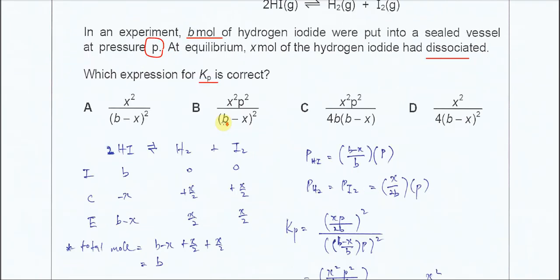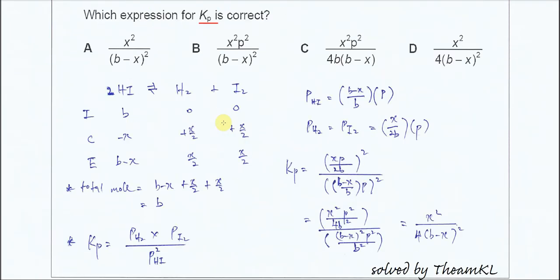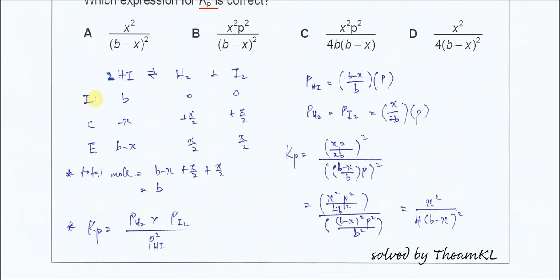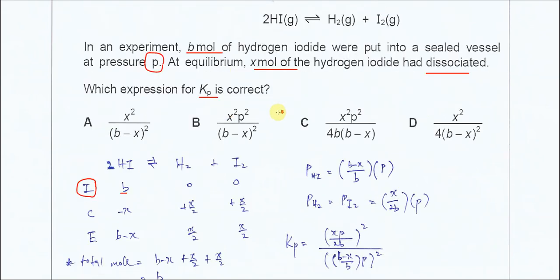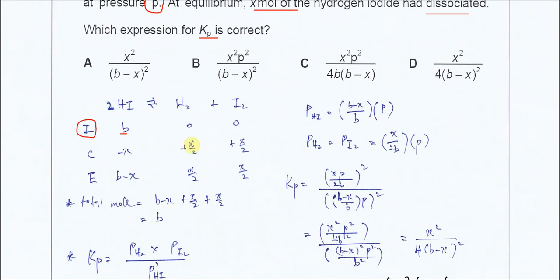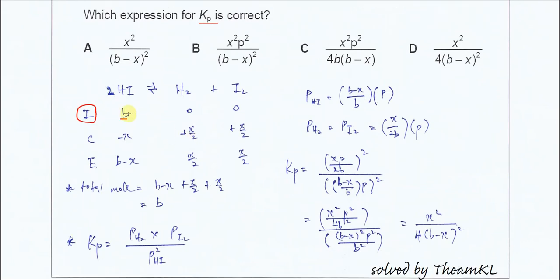First we need to start with the ICE table. So for the initial, HI is B, H2 and I2 both 0. C for change. The question already mentioned the HI has X moles dissociated, so therefore HI must be minus X.